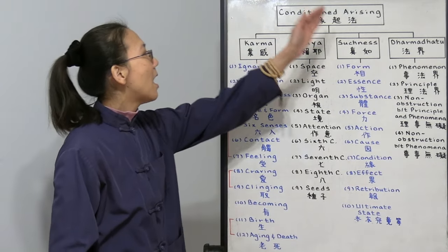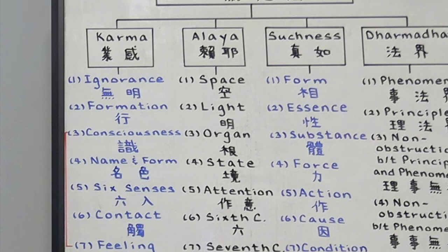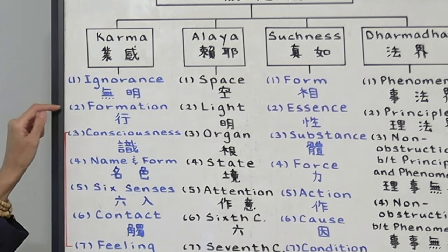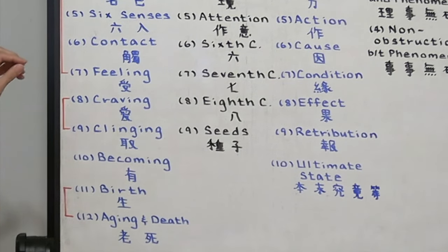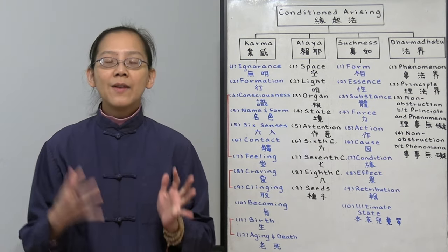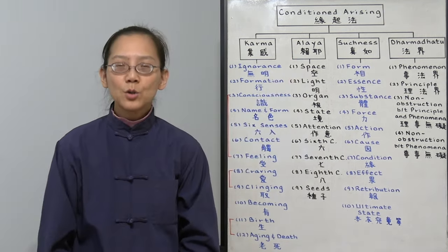Everything is condition arising because of these 12 factors. Ignorance is actually the condition. Formation is the cause. Three to seven is the effect. Then we create more karma by the condition of craving and clinging, the cause of becoming and the effect of more birth and aging. That's what we call reincarnation, life and death. This is the first basic condition arising we need to understand.